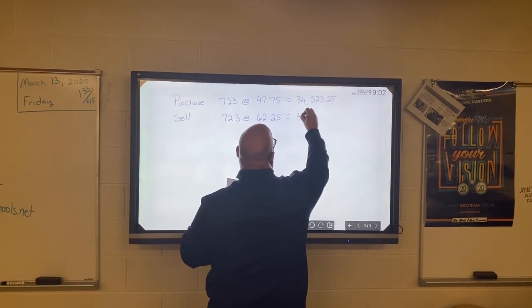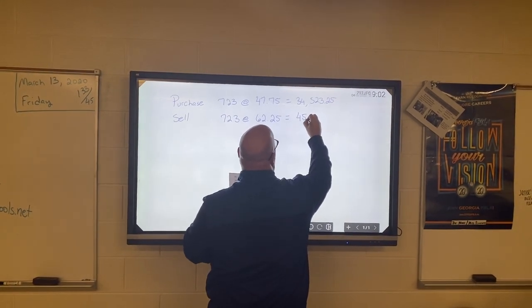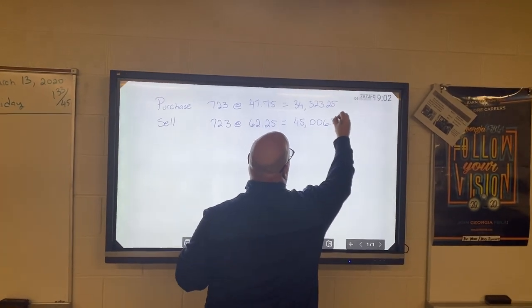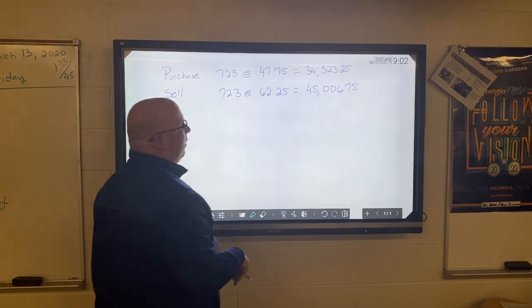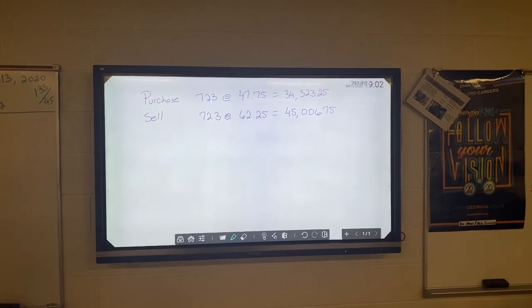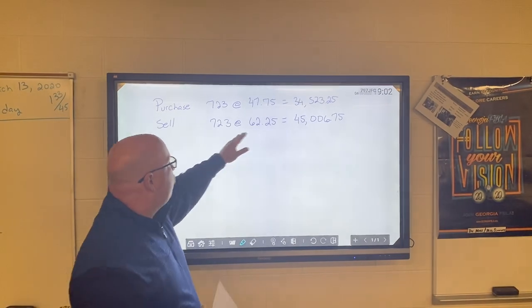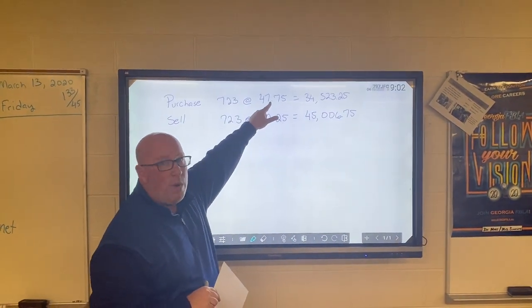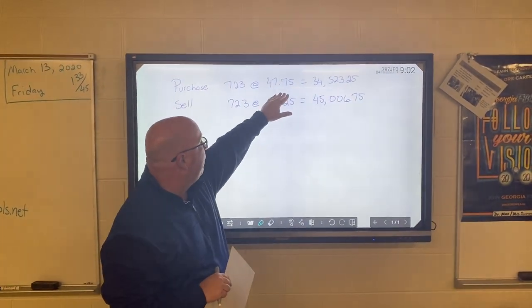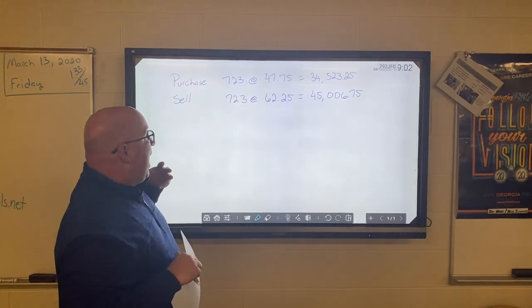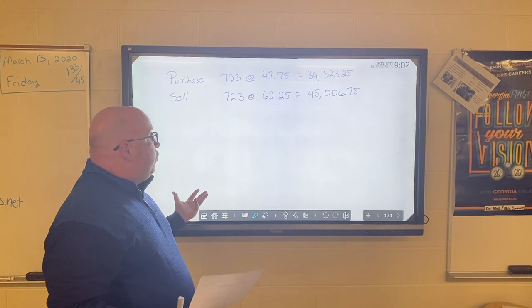But then a year later you sell it, and you're getting $62.25 per share. So if you do the math there, you're going to get back $45,006.75. Now to figure out if you made money or lost money should be very simple. We know that you made money because the stock went up in price, it went from $47.75 to $62.25.